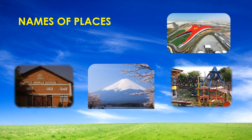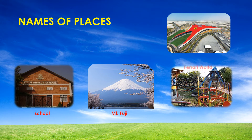Let's have examples of names of places. We have school, Mount Fuji, Ferrari World, and playground. These are all names of places.